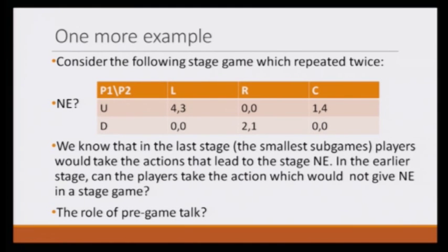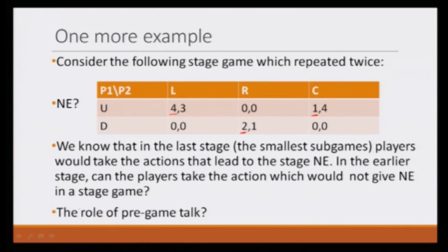Now let us find the Nash equilibrium of this game. If player 1 thinks that player 2 is going to play L, the best response of player 1 is U — we will mark it in red. If player 1 thinks player 2 is going to play R, the best response is D, as 2 is greater than 0. If player 1 thinks player 2 is going to play C, then the best response is U. Now I will mark the best response of player 2 in blue. If player 2 thinks player 1 is going to play D, the best response for player 2 is to play R.